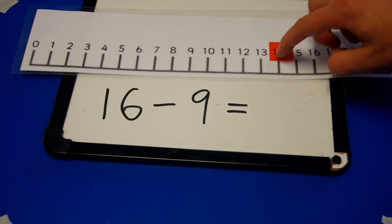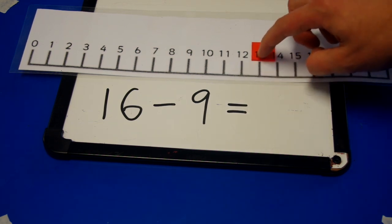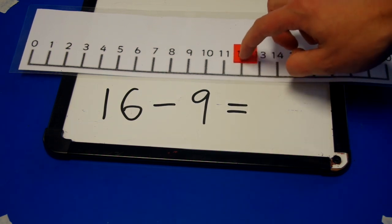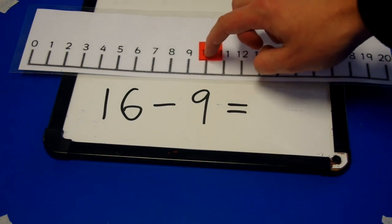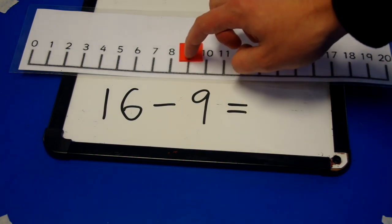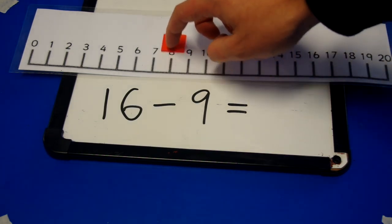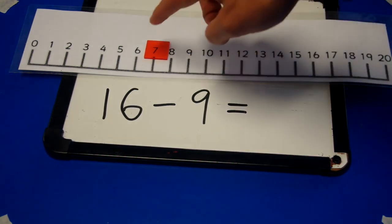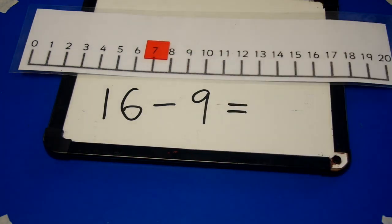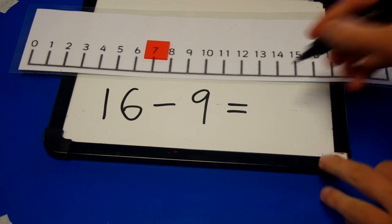1, 2, 3, 4, 5, 6, 7, 8, 9. I've moved 9 numbers back and I've landed on 7. So 16 take away 9 equals 7.